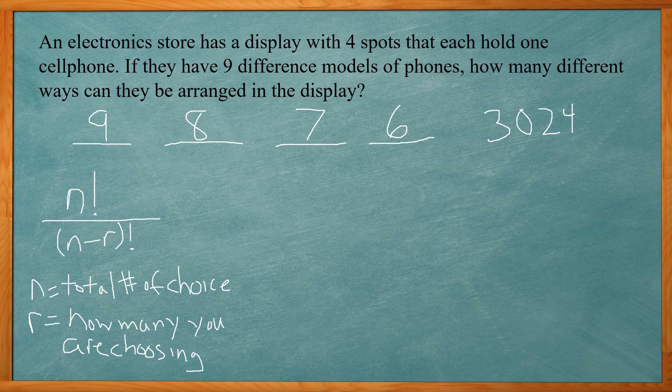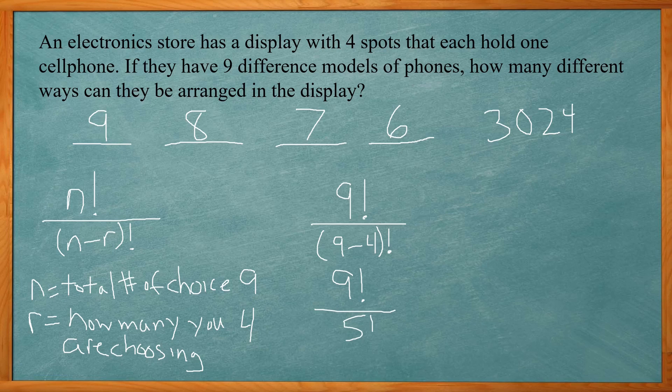So in this problem, we have nine we can choose from. That's the number of choices. And we're going to choose four of them because we have four spots. So n is nine and our r is four. So we're going to have nine factorial over nine minus four factorial, which reduces down to nine factorial over nine minus four is five, so five factorial.